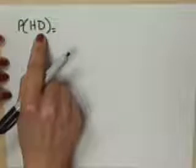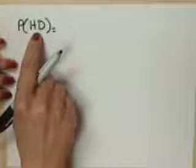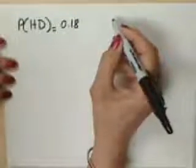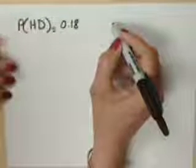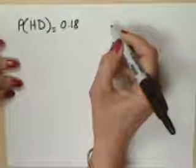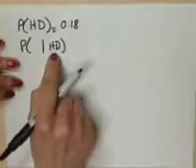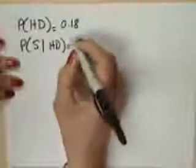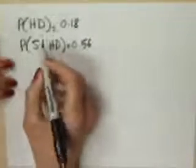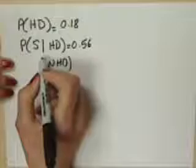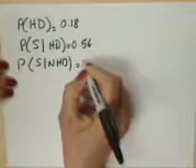The study found the following. The probability of heart disease is 0.18. We also know that for someone who has heart disease, the probability that they are a smoker is 0.56. But we also know that, given that somebody does not have heart disease, the probability of them being a smoker is 0.24.